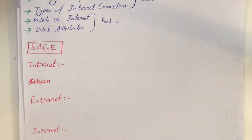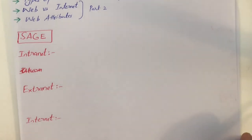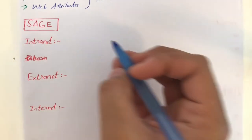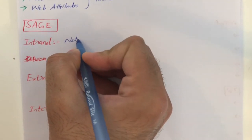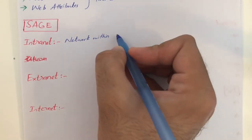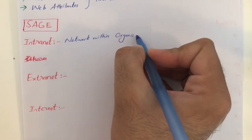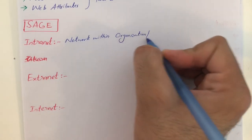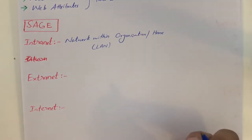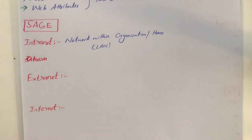Let's start with the definition of internet, and I'll also give you the historical background. First, in order to understand the definition of internet, we need to start with intranet. Intranet is defined as a network within an organization or within a home. It is also known as LAN, local area network. Basically, a network within an organization or within the same building is called intranet.